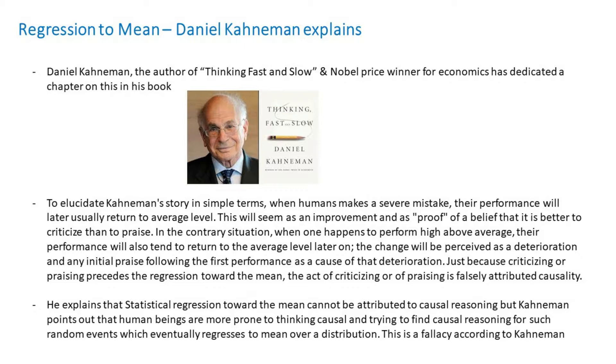Whenever there is a performance change, people tend to analyze a cause for that change. Kahneman concludes that just because criticizing or praising precedes the regression towards the mean, the act of criticizing or praising is falsely attributed causality. He explains that statistical regression towards the mean cannot really be attributed to causal reasoning. As opposed to the human thought process, we humans have a tendency to attribute causal reasoning to any outcome. People are more prone to finding causal reasoning for such random events which eventually regress to the mean over a distribution — this is a fallacy according to Kahneman.